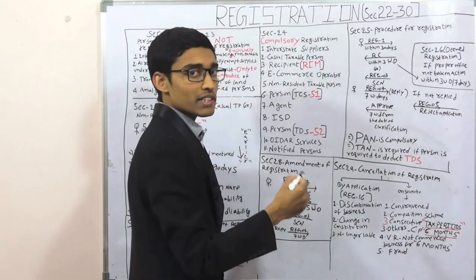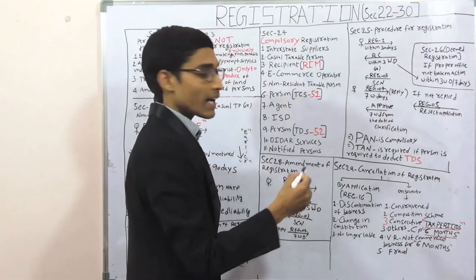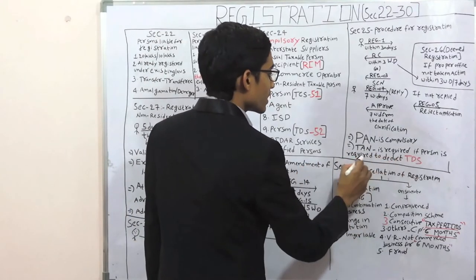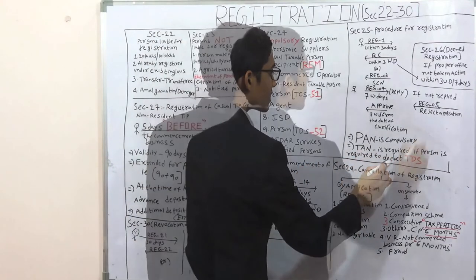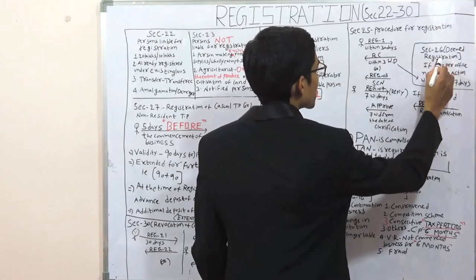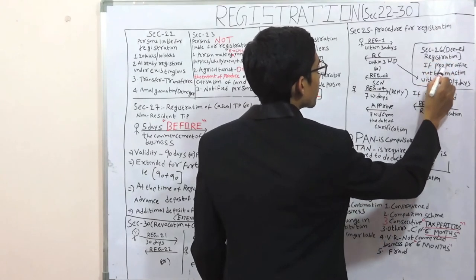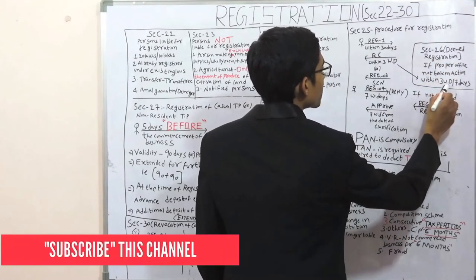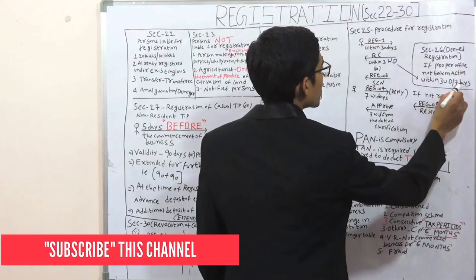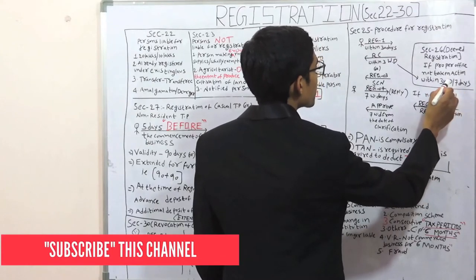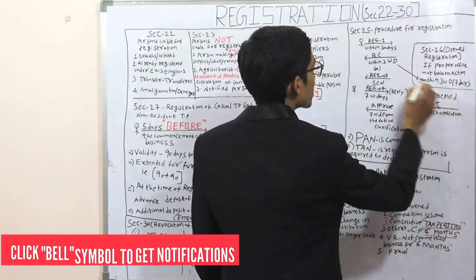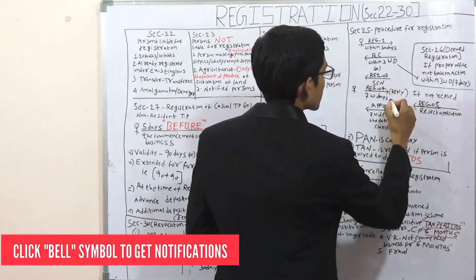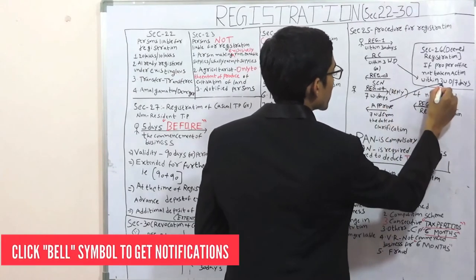PAN is compulsory for registration, and TAN is also compulsory if the person is required to deduct TDS. Section number 26 — deemed registration. If the proper officer has not taken action within 3 working days or 7 working days, then the person is deemed to be registered.